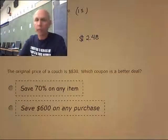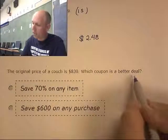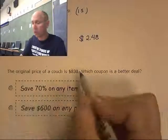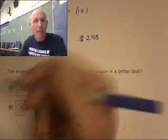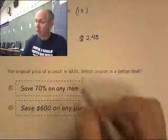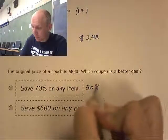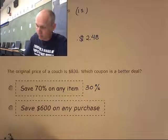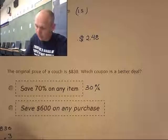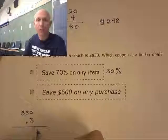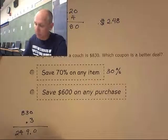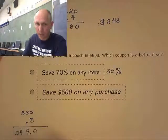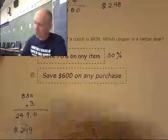The original price of a couch is $830. Which coupon is a better deal: 70% off, or $600 off the price? If I do 70% off, how much am I going to pay? 70% off means I'm going to pay 30%. So 30% times $830 — 0.30 times 830 — works out to $249. So with this coupon it's going to cost me $249.